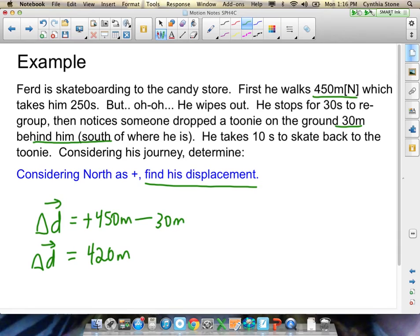You can either write your answer in a couple different ways. You could leave it as just this, because as soon as you have defined somewhere that north is positive, it's implied that since this is positive, that's north. So you could also say, if you wanted to, say delta d equals positive